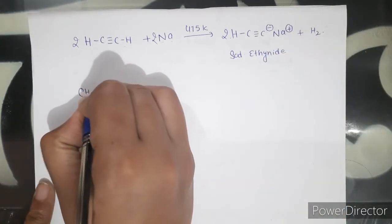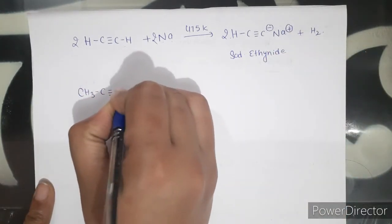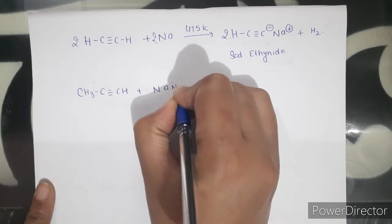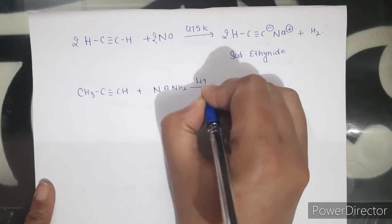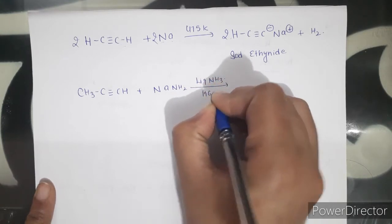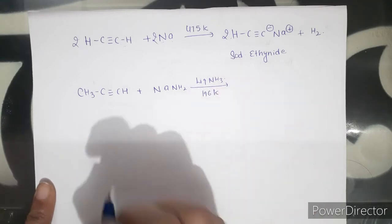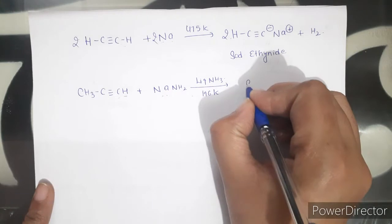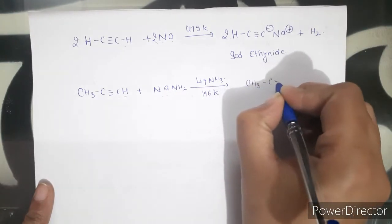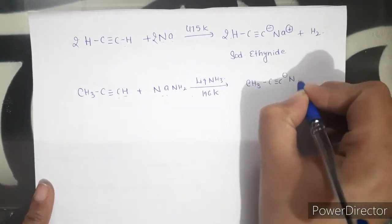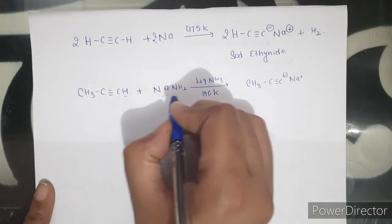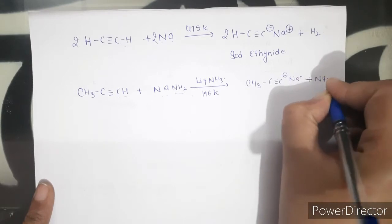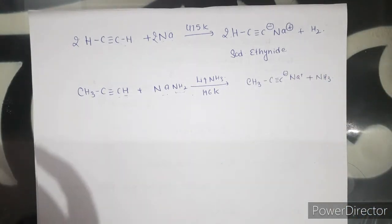Similarly, when an alkyne molecule reacts with sodamide (NaNH₂) in the presence of liquid ammonia at 196 K, the hydrogen is also replaced by sodium. The displaced hydrogen then reacts with the NH₂ (amide) group and is converted into ammonia.